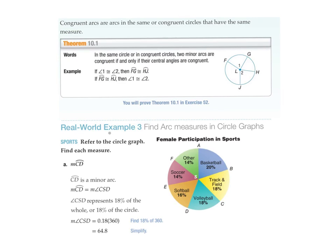So here's example number three, real world example. What is it we want? It's talking about CSD. So CSD, which is softball. What does it represent? Well, it's a minor arc for a start and it's 18 percent of the whole thing. Well, if you are OK to just put it straight into a decimal, it's 0.18 times 360.